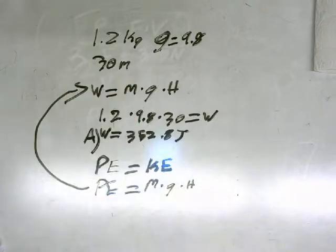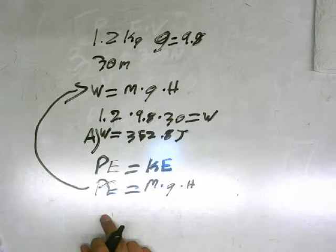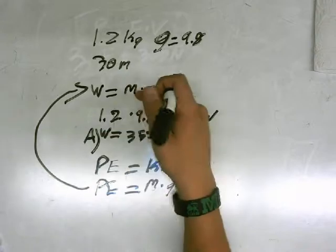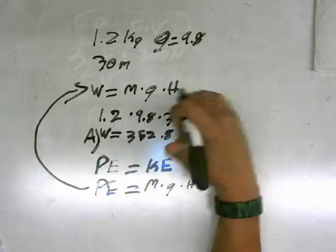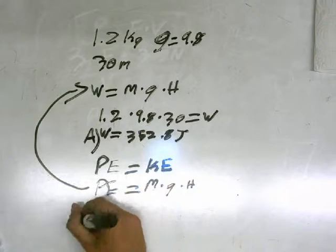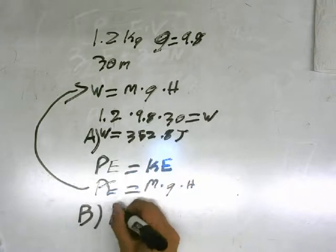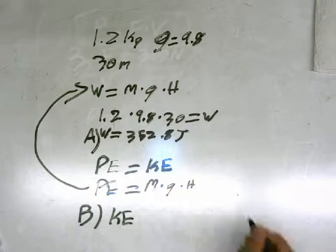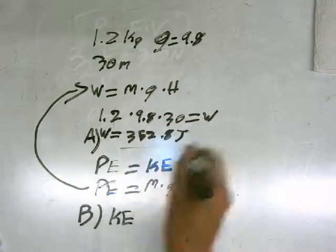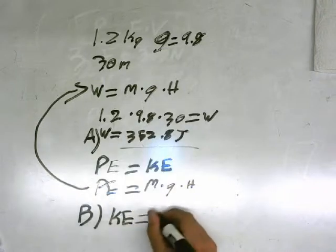Potential energy can also equal work in this case. So work equals kinetic energy. For part B, kinetic energy equals mass times gravity times height. We've already done that. Kinetic energy equals 352.8 joules.